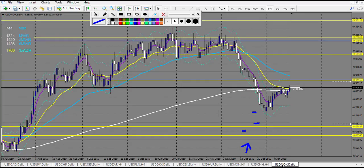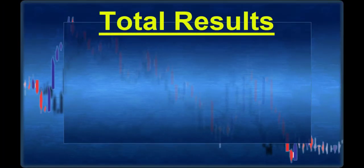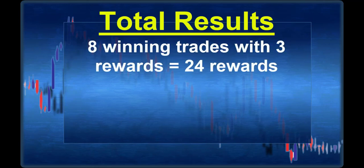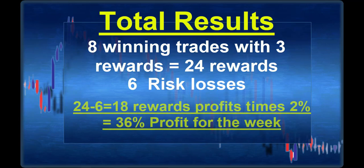USD/NOK didn't touch any level. So the total count for this week: we have seven to eight winning trades with three reward each, making 24 reward in profit. We have six losing trades with one risk each, so 24 minus 6 equals 18 reward profit — that's 36% profit for the week. I hope you took advantage of the profile and see you next week.